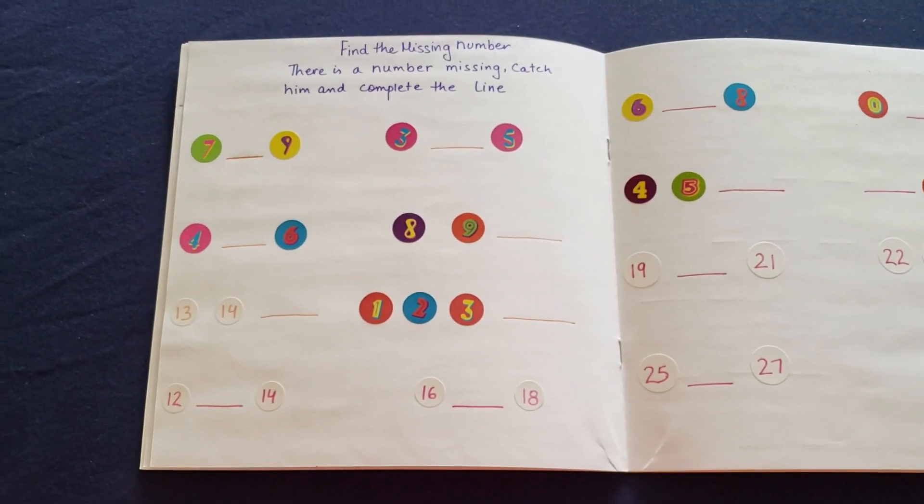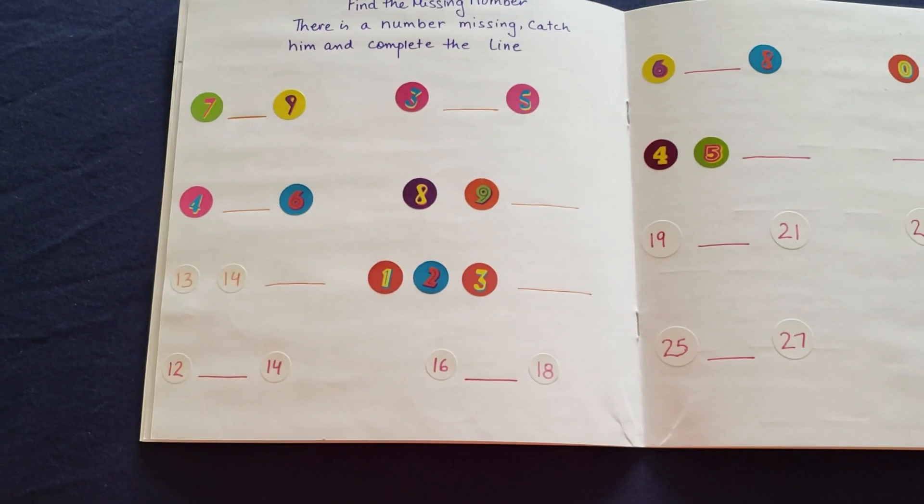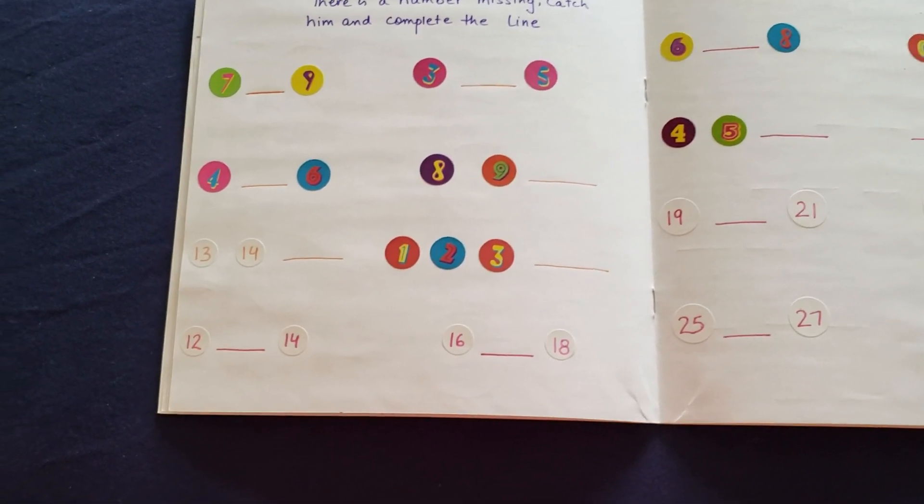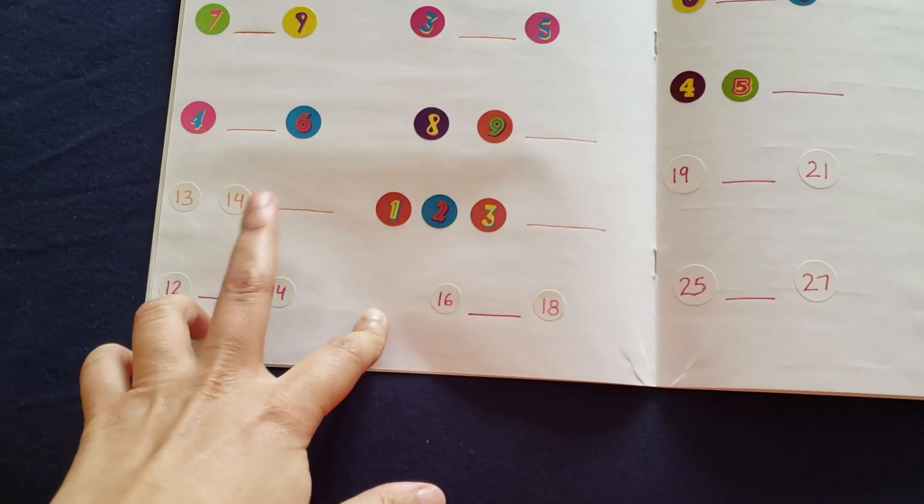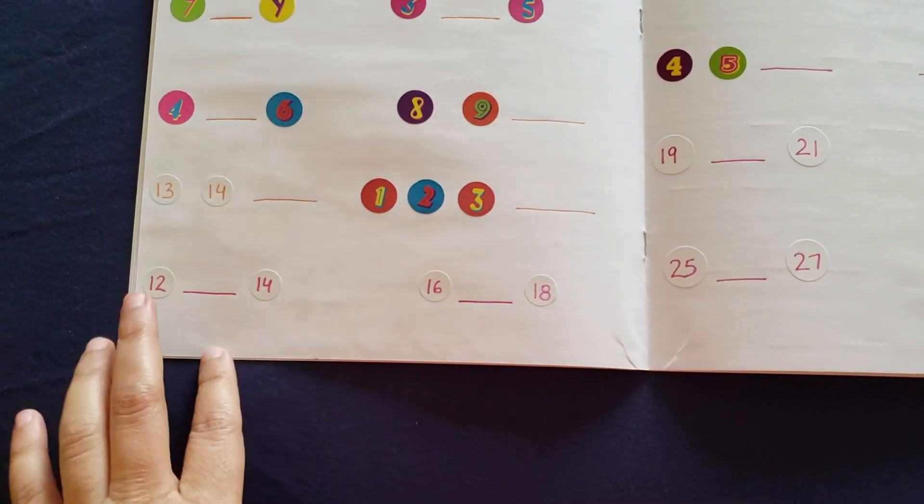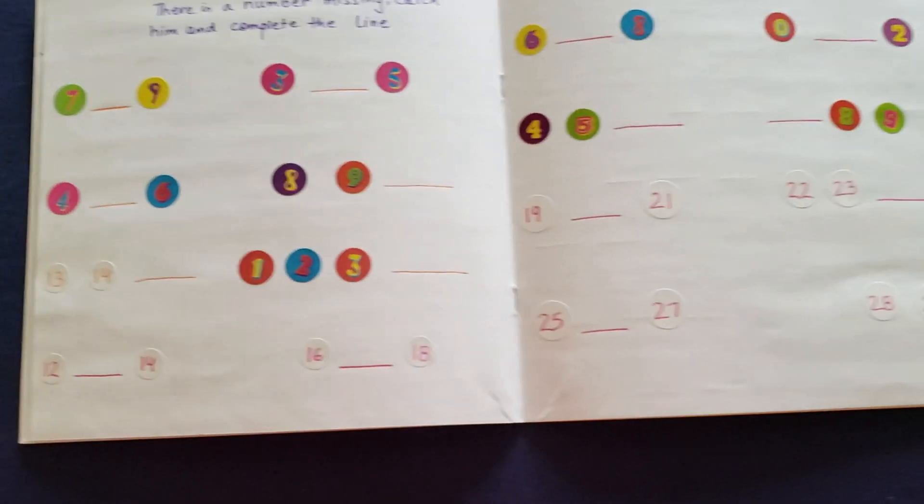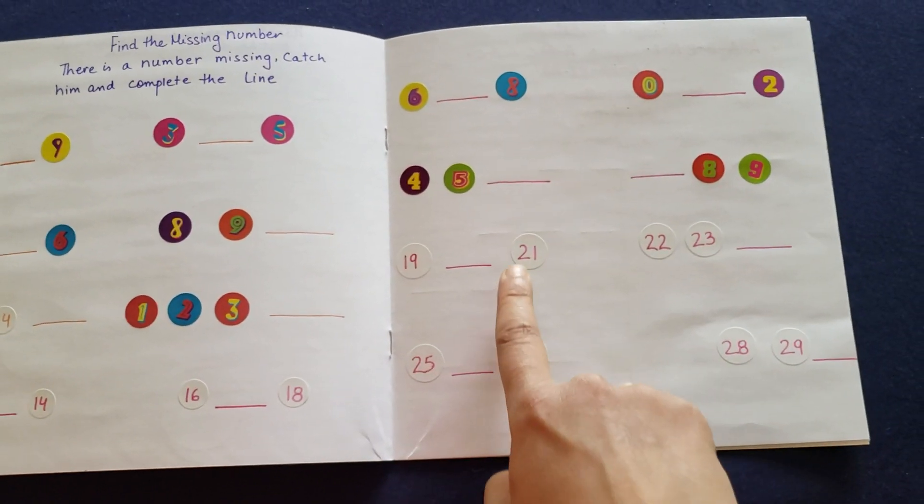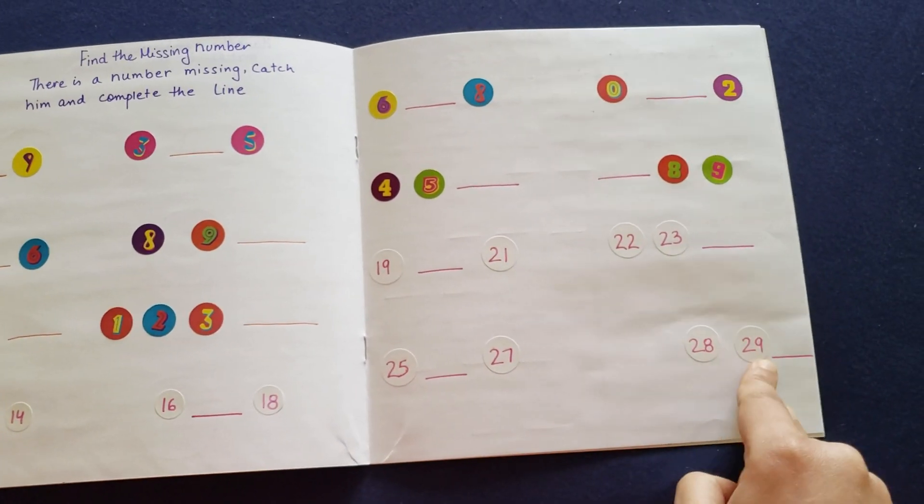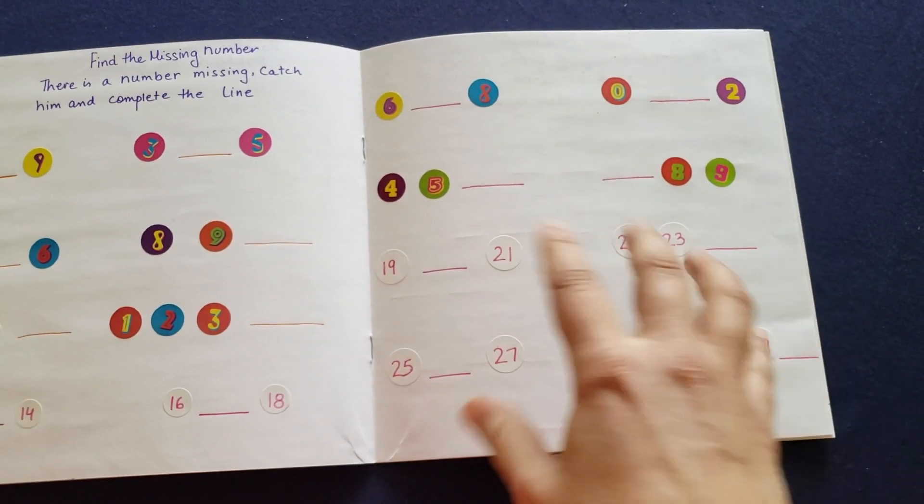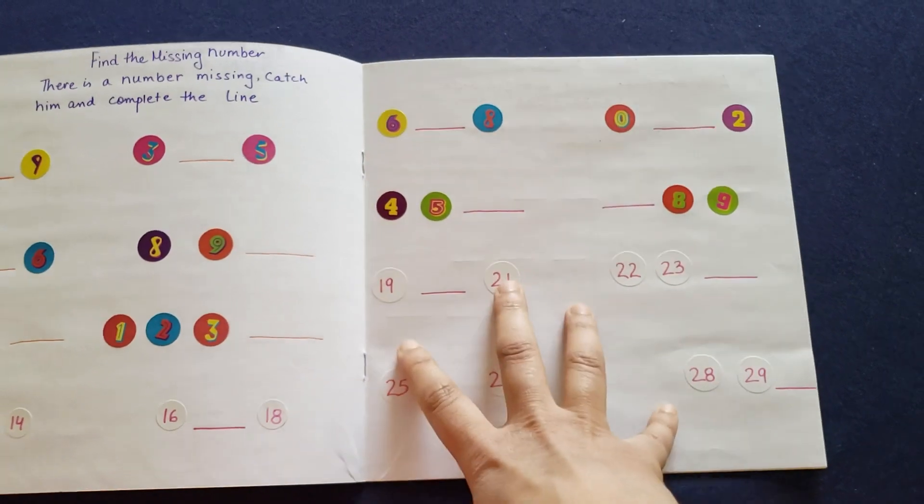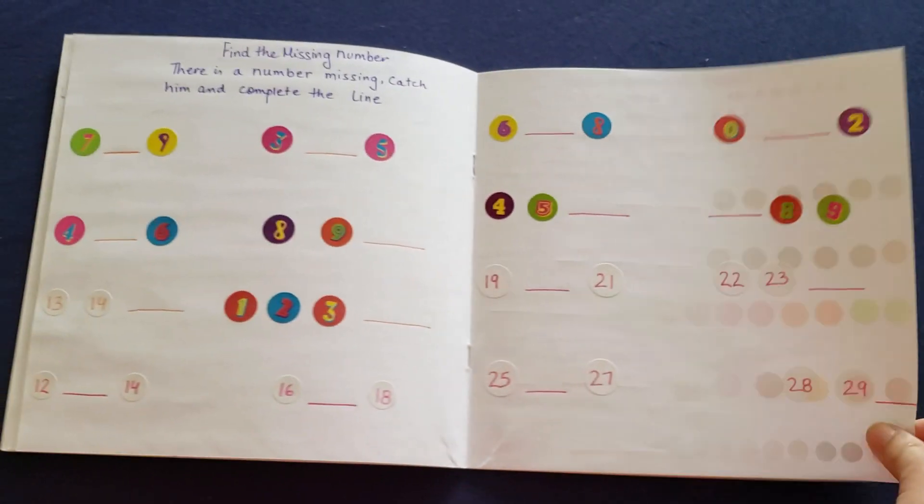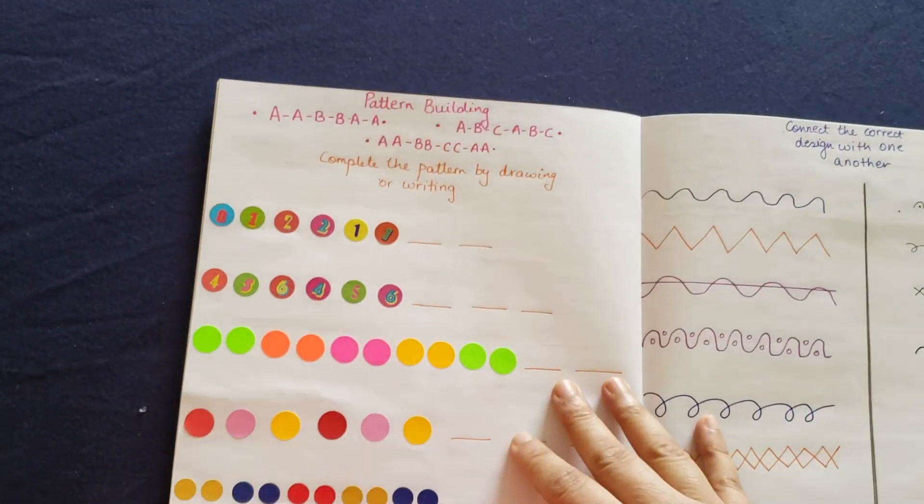So I've given 13, 14, 15, she needs to write. Then 12, 13, 14, she needs to write. And just to make it a little more challenging, I did go up to 30 here. I think if it's going to be difficult for her, her mom can help her out or she can always do it later.